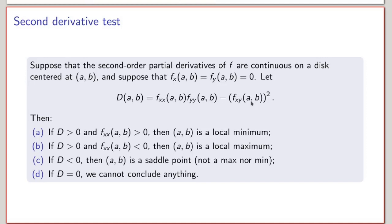There are four cases. If D > 0 and f_xx > 0, then (a, b) is a local minimum. If D > 0 and f_xx < 0, then (a, b) is a local maximum. If D < 0, then (a, b) is a saddle point — neither a local maximum nor a local minimum. And if D = 0, the test fails and we cannot conclude anything.